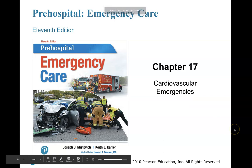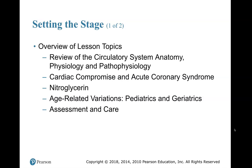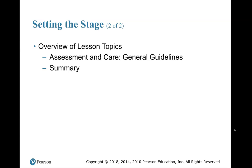Welcome back. Chapter 17: Cardiovascular Emergencies. Our overview is going to be the review of the circulatory system — anatomy, physiology, and pathophysiology — cardiac compromise and acute coronary syndrome, nitroglycerin, age-related variations, pediatrics and geriatrics, and assessment and care. Assessment and care, general guidelines, and summary.